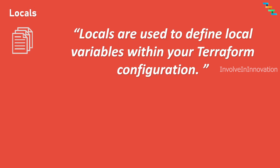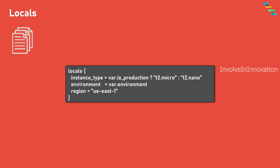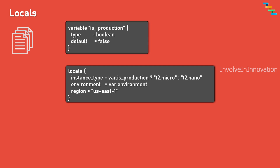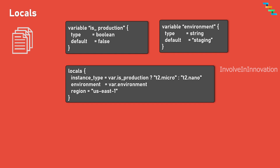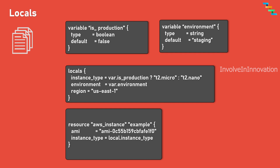Next we will see about the locals block. Locals are used to define local variables within your Terraform configuration. They allow you to create reusable intermediate values or perform calculations without repeating complex expressions throughout your code. Locals values can be assigned a static value or computed using expressions referencing other resources, variables, or data sources. For example, you can derive 'instance_type' using a ternary operator: if 'is_production' is true then use t2.micro, otherwise t2.nano. You can also derive environment from a variable and hard-code region directly in locals, then reference them as 'local.attribute_name'.